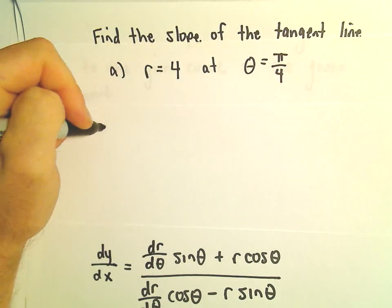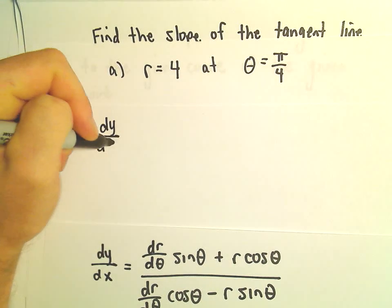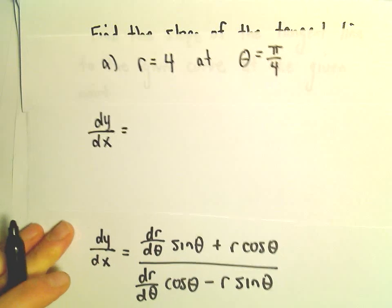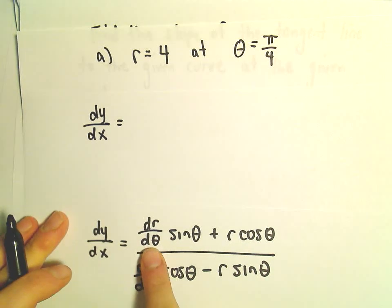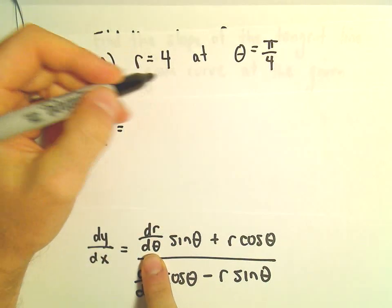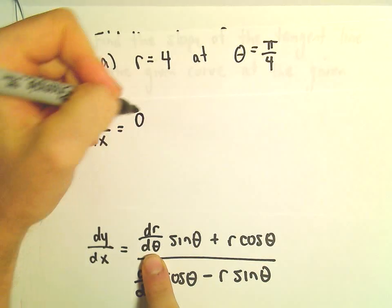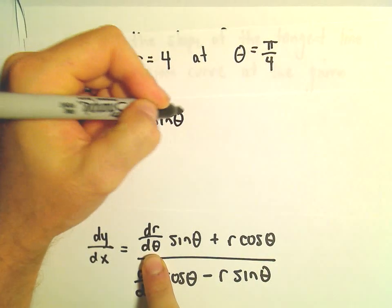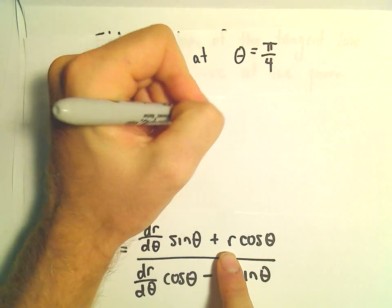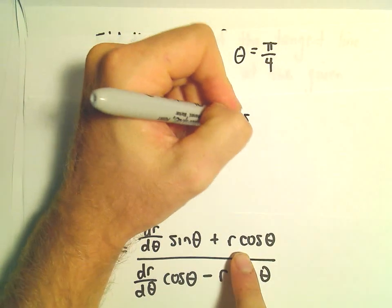So dy/dx equals, we take the derivative of r with respect to theta. Well, the derivative of a constant 4 is just going to be 0. We multiply that by sine theta plus r, which is just going to be 4, times cosine theta.